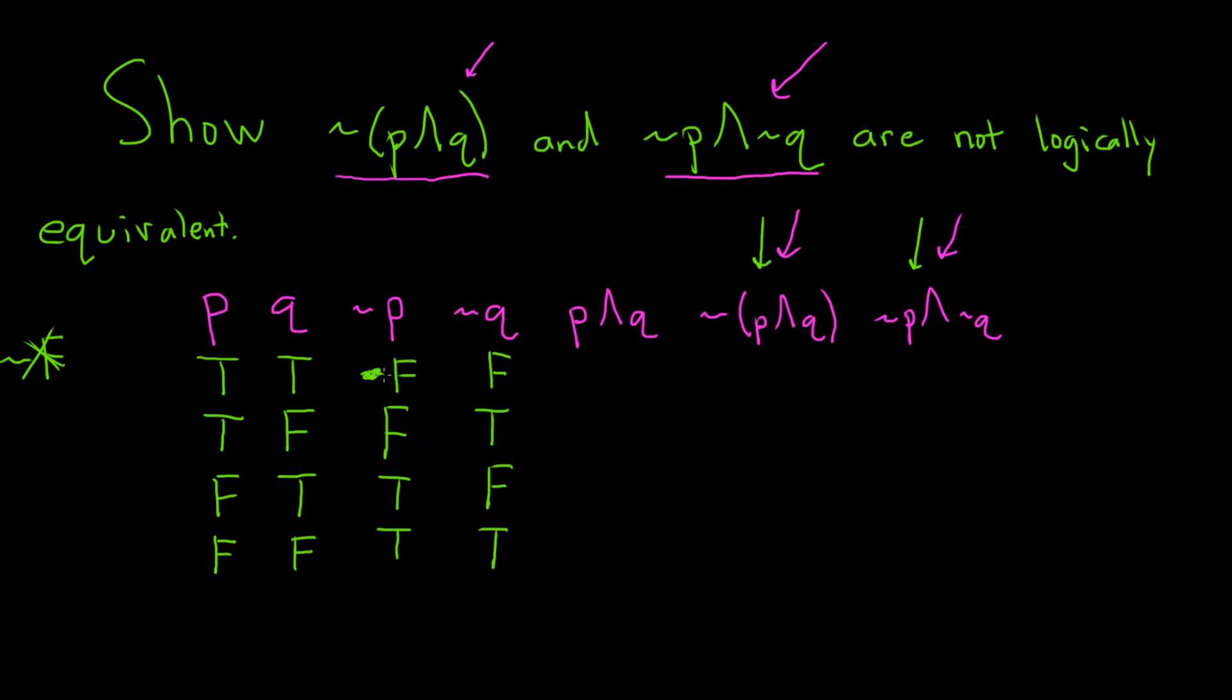Now we're going to look at p∧q. So for p∧q, you just look at the p and the q. And p∧q is only true when they're both true. So in the first case, it's true. In all the other cases, you get some falseness going on. So this will be false, false, false. It's only true when they're both true.